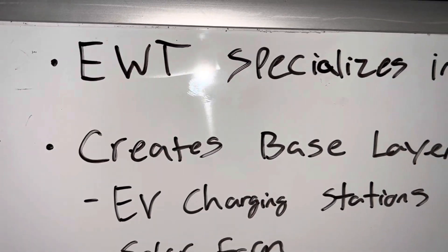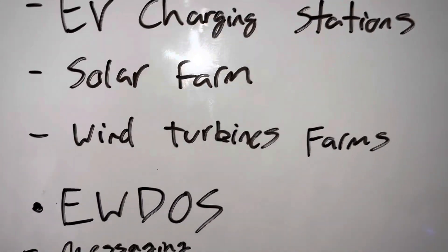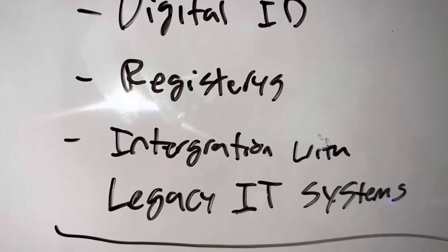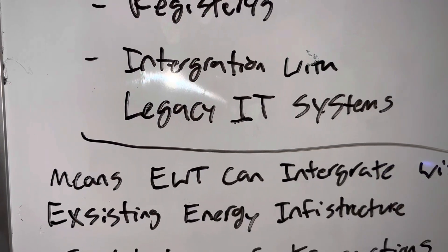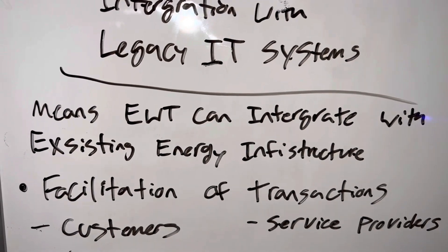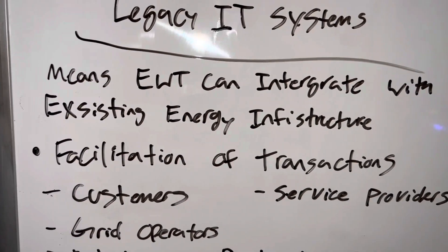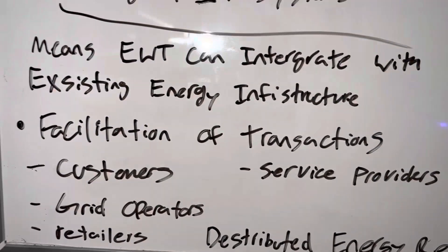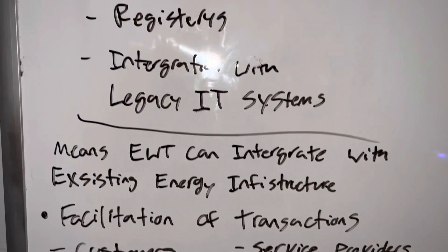Energy Web Token creates a base layer for the management of distributed energy resources such as EV charging stations, solar farms, wind turbine farms, etc. We have the EWDOS — the Energy Web Decentralized Operating System — which brings on-chain messaging, digital IDs, registration, and integrations with legacy IT systems. This means Energy Web can integrate with existing energy infrastructure. On top of that, it introduced the facilitation of transactions between customers and service providers, grid operators, and retailers — that is the distributed energy resources. It is checking off every single box to be the future of energy management.